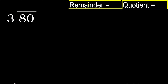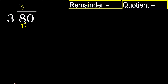80 divided by 3. 8 is not less than 3, therefore we work with 8. 3 multiplied by 3 is 9 — 9 is greater than 8, therefore no. 3 multiplied by 2 is 6 — 6 is not greater than 8 and 6 is the closest, therefore yes. 8 minus 6 is 2.